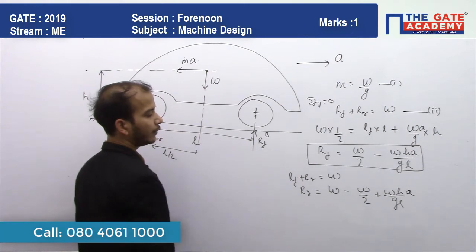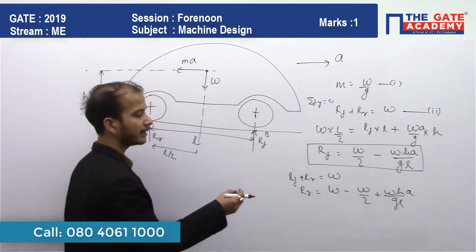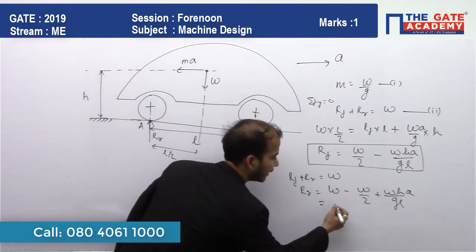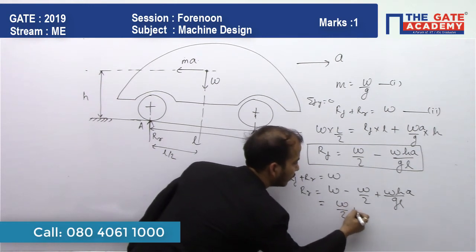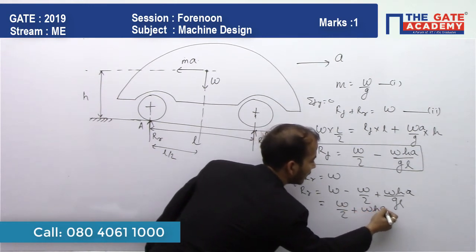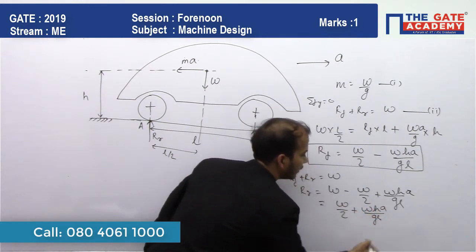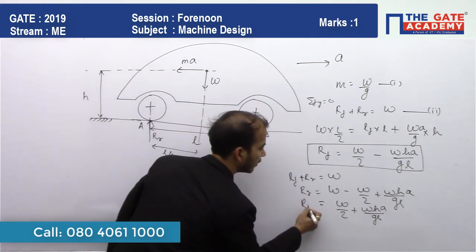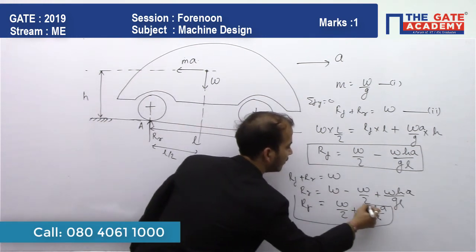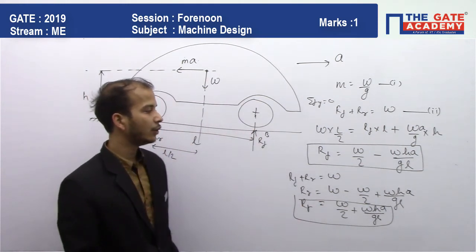W by 2, we can say W by 2 plus Wha by gl. Rr's value is W by 2 plus Wha by gl.